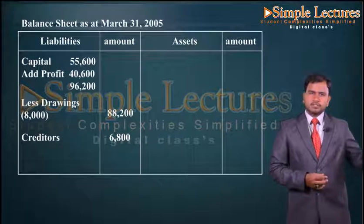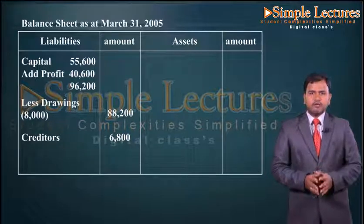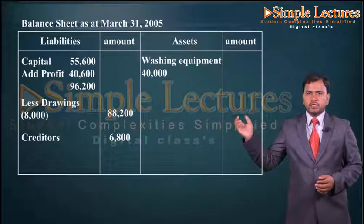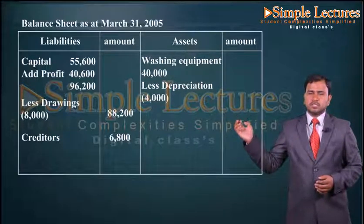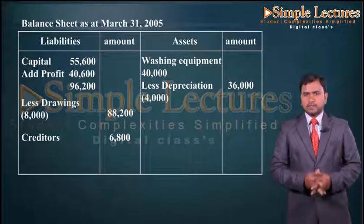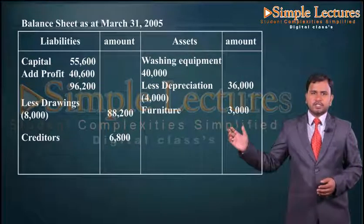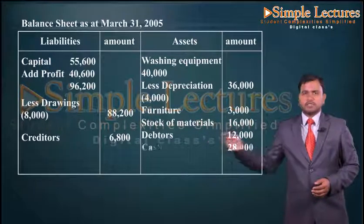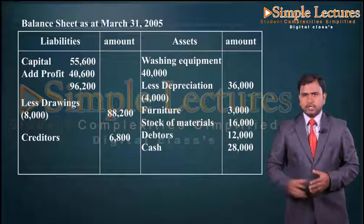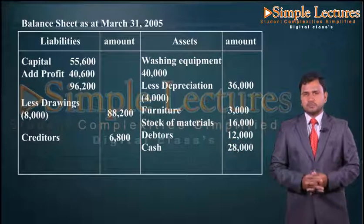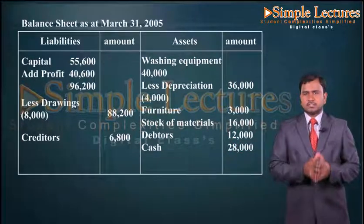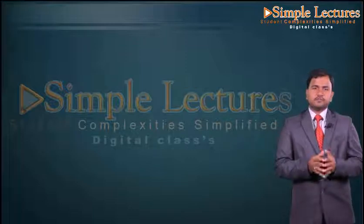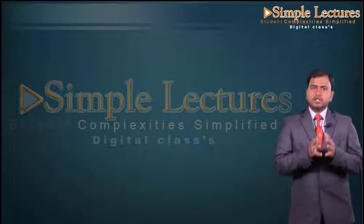On the asset side, washing equipment is forty thousand in the inner column, less depreciation four thousand, giving thirty six thousand in the outer column. Furniture: three thousand. Stock of material: sixteen thousand. Debtors: twelve thousand. Cash: twenty eight thousand — the closing cash from the cash summary. The total of both sides is ninety five thousand. Note that the opening capital was not given, so a statement of affairs must be prepared.